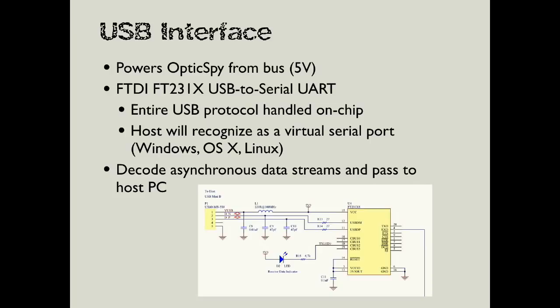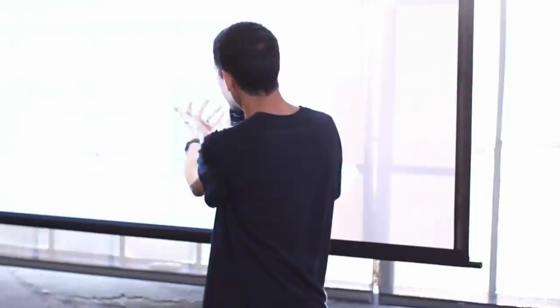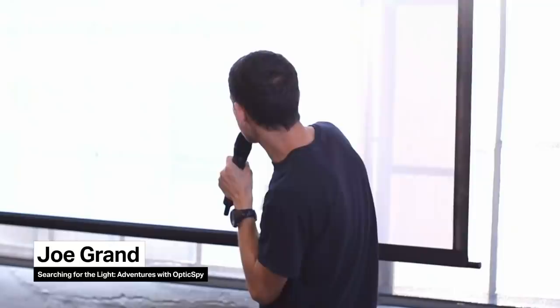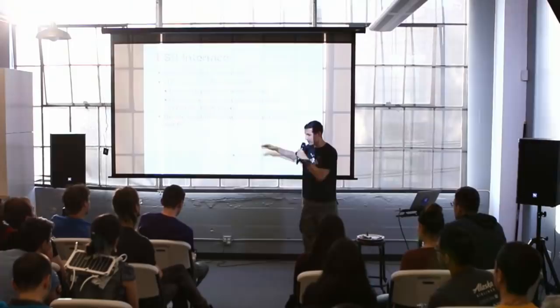The final stage is the USB to serial adapter. This powers the device and will take the output from the comparator and dump that out to the computer. Because this is a USB to serial adapter, it shows up on a computer as a virtual COM port, virtual serial port. You could use a terminal program like PuTTY, HyperTerminal, or screen to receive the data being received from OpticSpy. If you're working with a system that's not in asynchronous data format, there's a test point — TP5 — that you can tap before it gets to the adapter and hook up to an Arduino or logic analyzer.